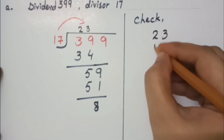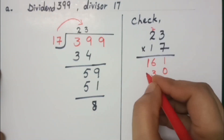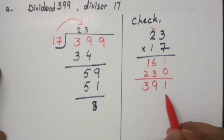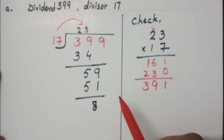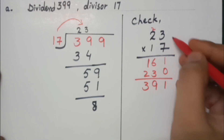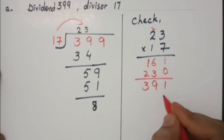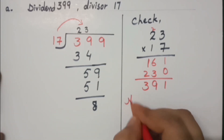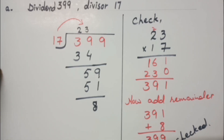23 multiplied by 17 gives 391. When we multiply the quotient and divisor, the answer we get is 391. Then we add the remainder to this result. Now I hope you can easily solve the further questions of the exercise by yourself. Thank you so much. Allah Hafiz.